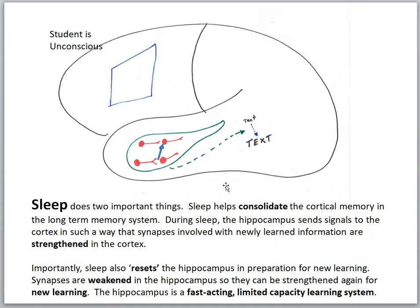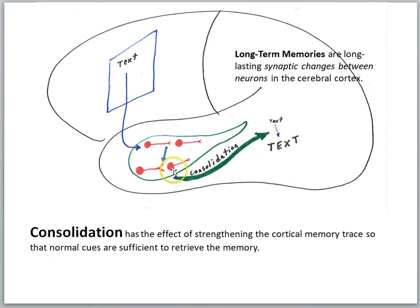Scientists have discovered that sleep is very important in memory processing. Sleep does two important things. First, sleep helps consolidate the cortical memory in the long-term memory system. During sleep, the hippocampus sends signals to the cortex so that synapses involved with newly learned information are strengthened in the cortex. Some of this consolidation processing happens during sleep — the hippocampus is signaling the cortical memory trace to get stronger. Initially the hippocampus showed synaptic plasticity increases in certain synapses as a memory trace, and then during sleep the hippocampus helps the cortex strengthen the cortical version of the memory.